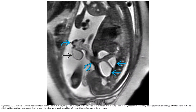This is a SSFSE T2 MRI in a 31-week gestation fetus. There is a small abdominal wall defect to the right of the umbilical cord insertion. Meconium-containing bowel protrudes with a cystic lesion into the amniotic fluid. Several dilated proximal small bowel loops remain in the abdomen.